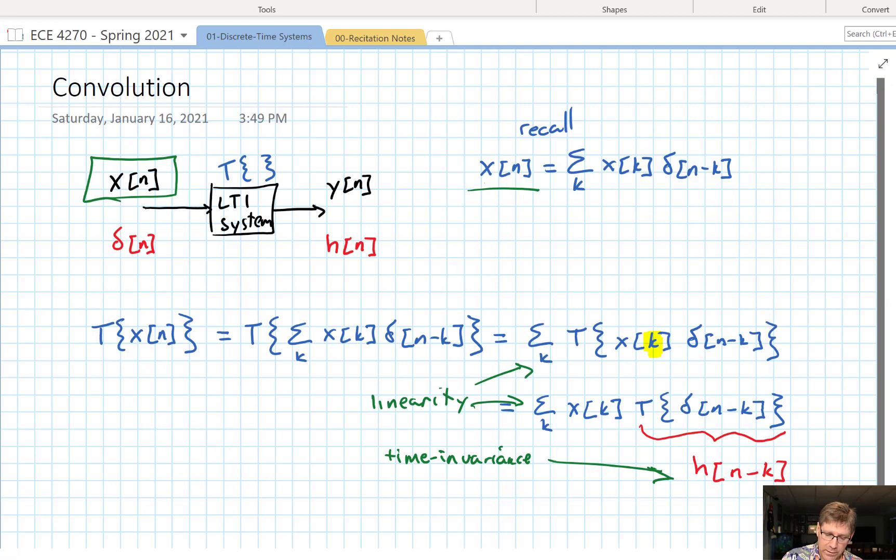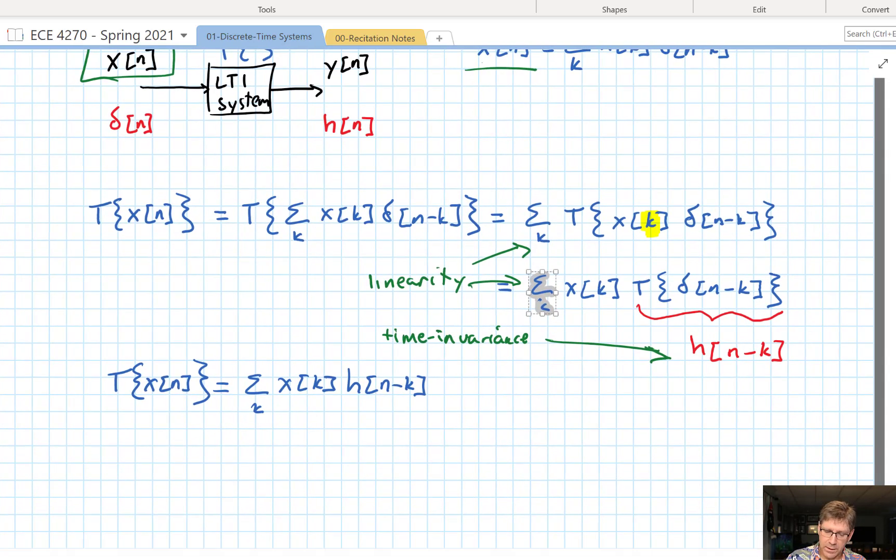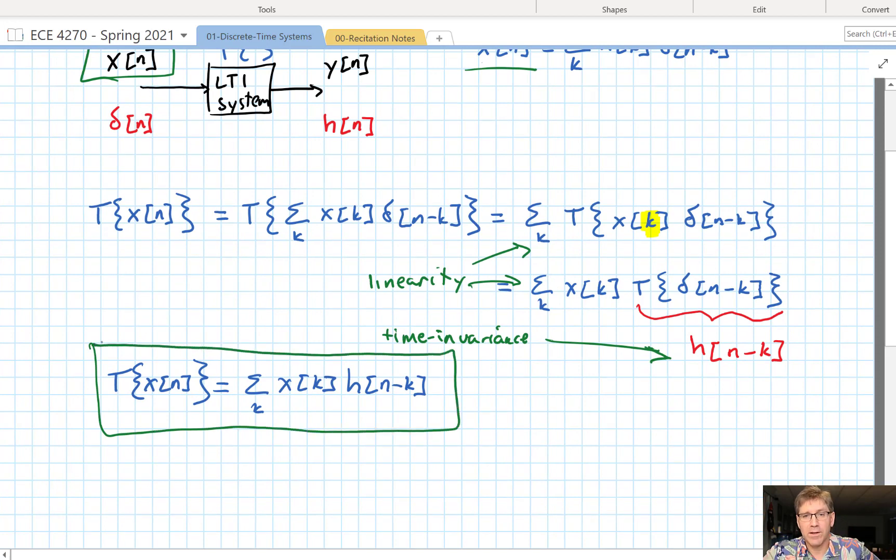Alright so let's write down this function nice and simplified as we've worked it out. Well, this is going to be equal to the sum over k of x of k times h of n minus k. This should not be a new unexpected response. But this is my favorite way of developing it. I think it looks really elegant. All we do is a straightforward application of linearity and time invariance and we get that.